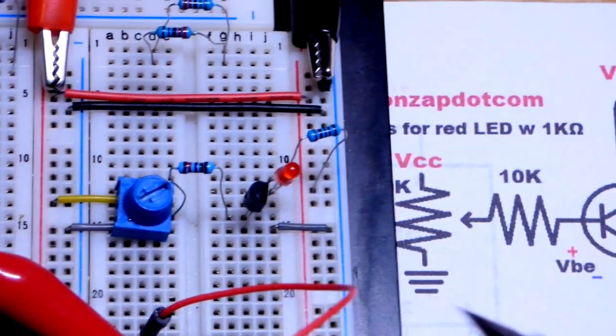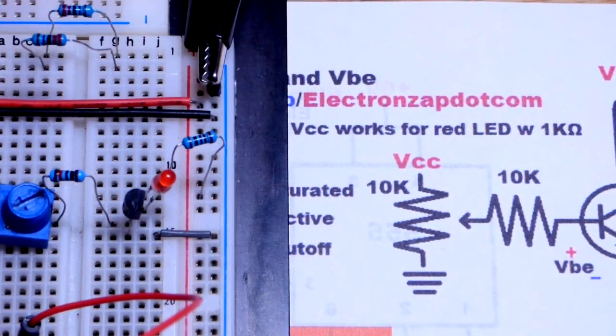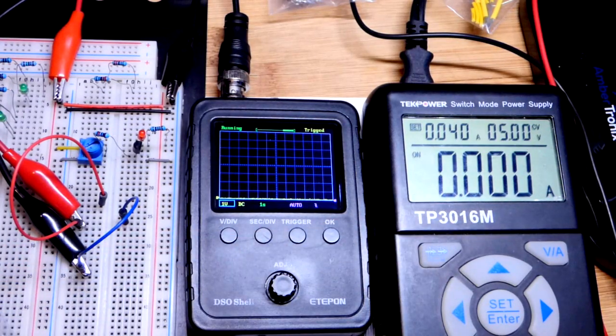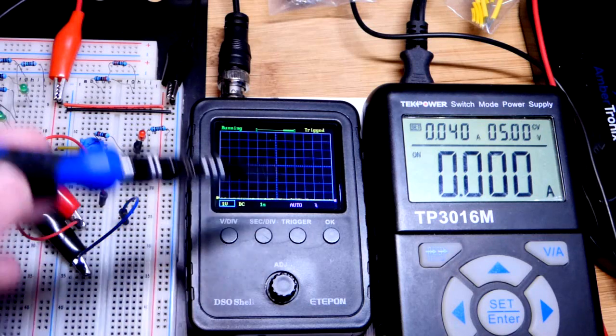And 10 kiloohm trim pot because that's what I have. It's to the positive supply and to the negative supply. So now, we're going to start with 5 volts here. That's a common voltage that I work with.